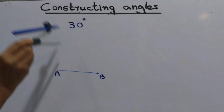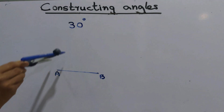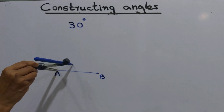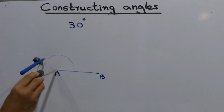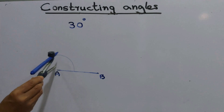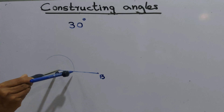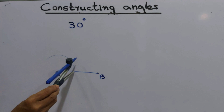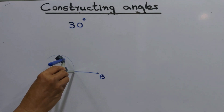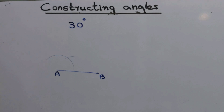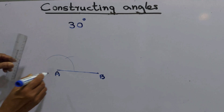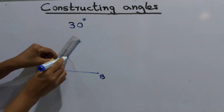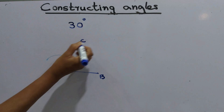First, you have to draw an angle of 60 degrees. In an earlier lesson we did this. From point A, we draw an arc that meets the AB line, take the point there, then draw another arc. This constructs a 60 degree angle.